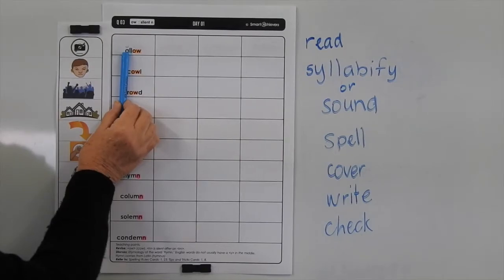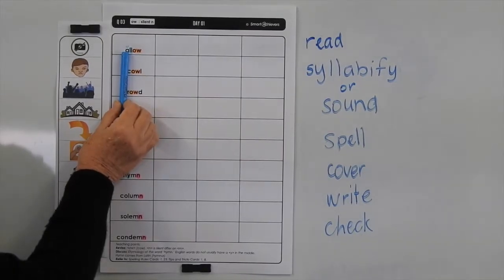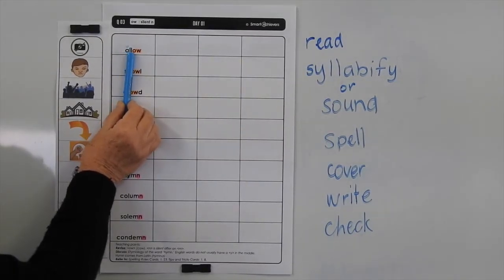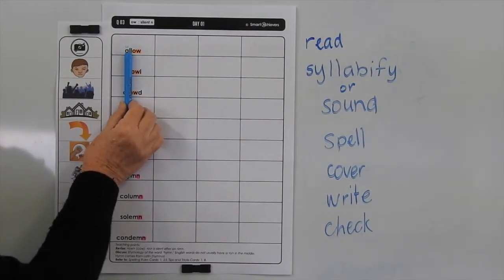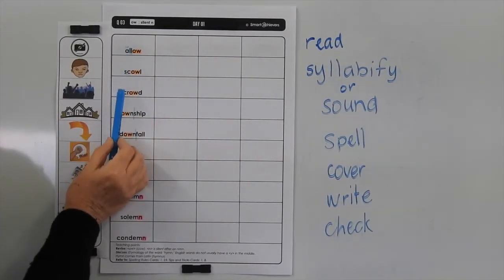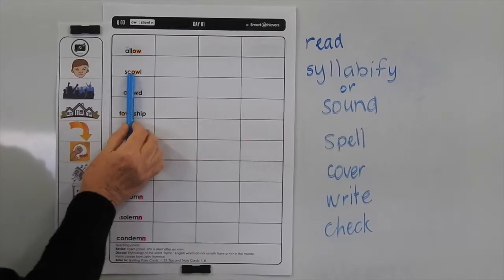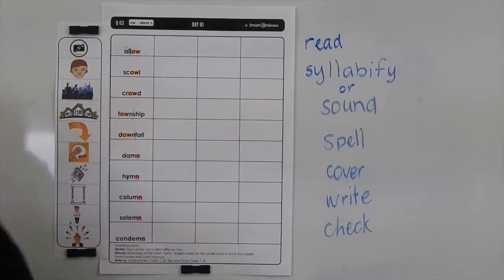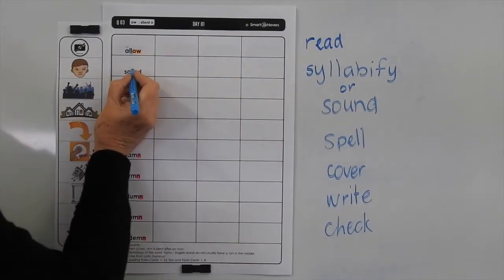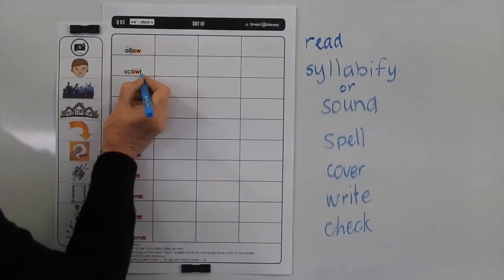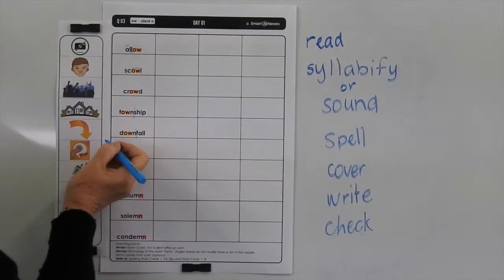We've got 'allow' — we know this is a short vowel sound, so we've got the double L after it. 'Scale' — we've got a long vowel sound, so we've only got one L after it.